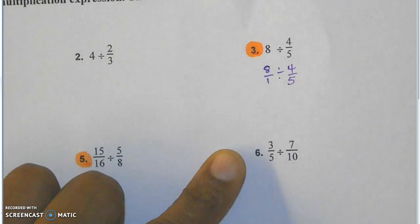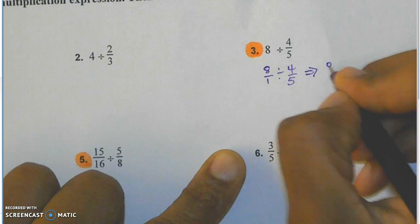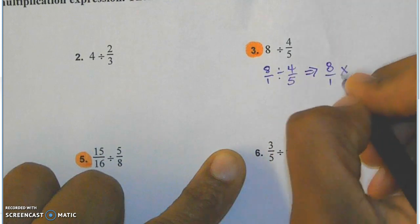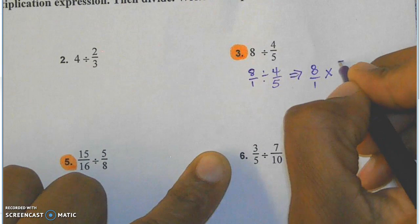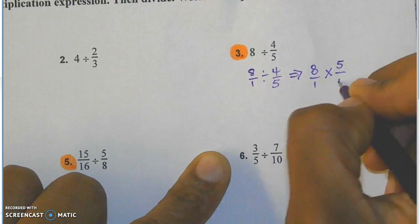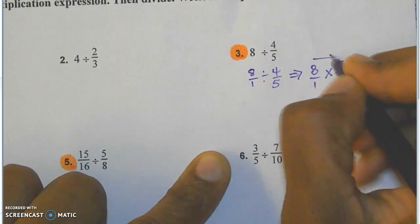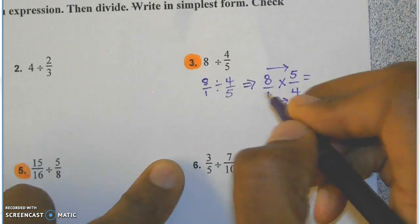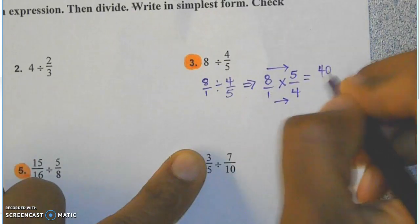Then we're going to change this to a multiplication expression. Eight over one multiplied by the reciprocal. The reciprocal is five fourths. We multiply straight across to get 40 over four.